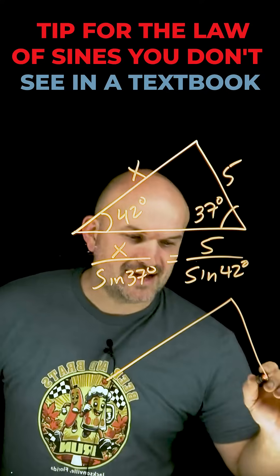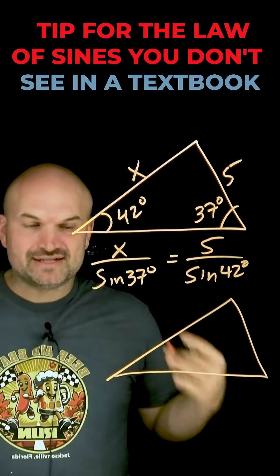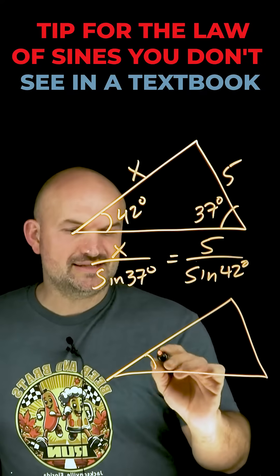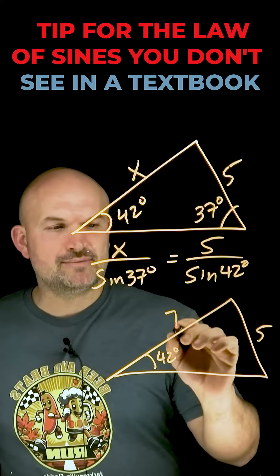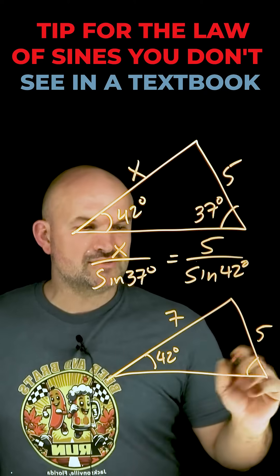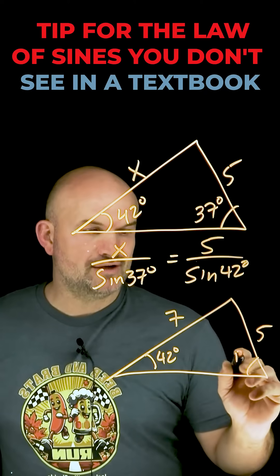Now that is not going to be the same process for every single triangle. For instance, when you have the ambiguous case, let's say we have 42 degrees over here, this is still 5, but let's say this number is 7, and we want to be able to figure out what this angle is. Let's call this angle b.